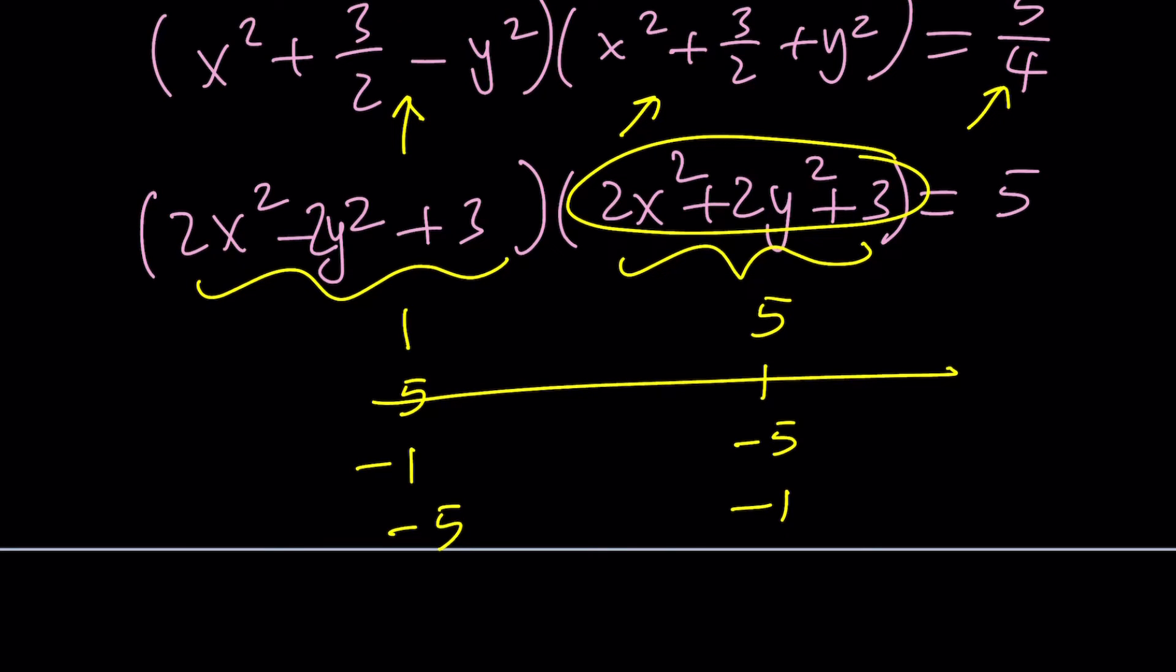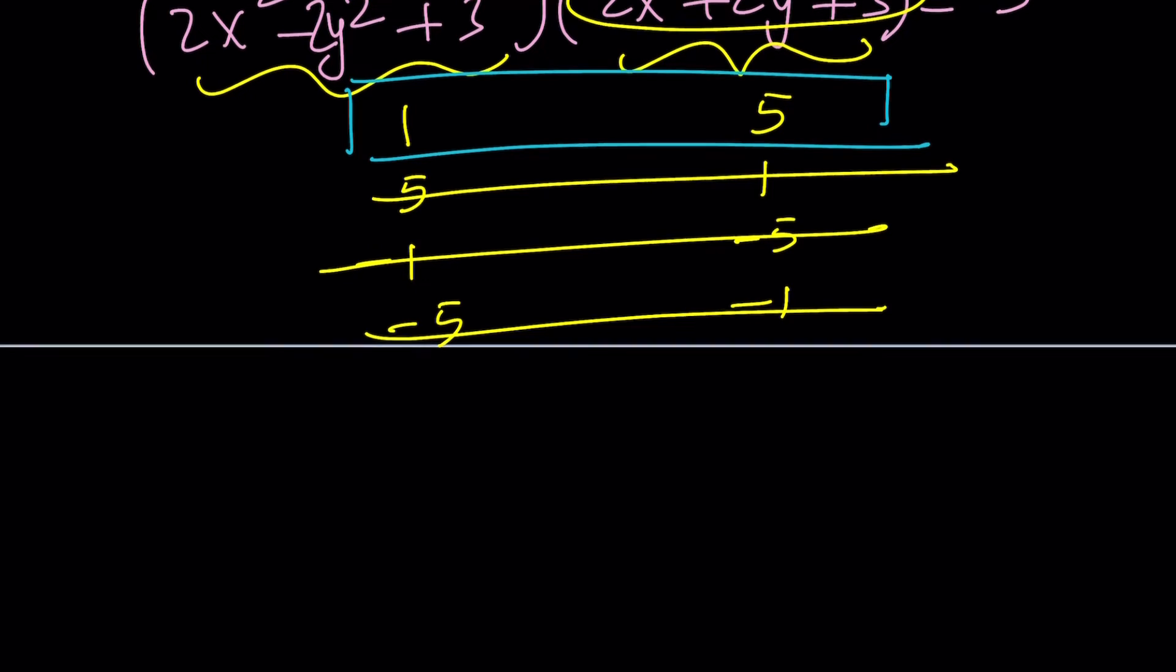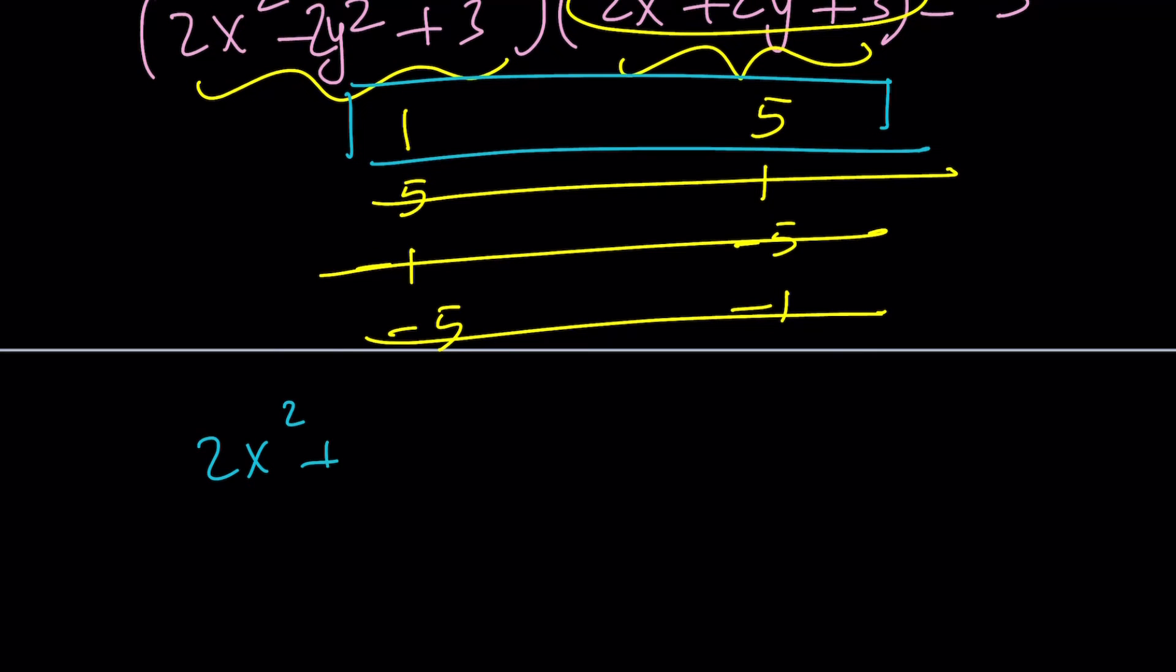If this is negative 5, again, the same reason. So we only end up with a single case that is supposed to work. And that's when the first factor is 1 and the second one is 5. Let's go ahead and write this down. 2x squared plus 2y squared plus 3 is equal to 5. And 2x squared minus 2y squared plus 3 is equal to 1.